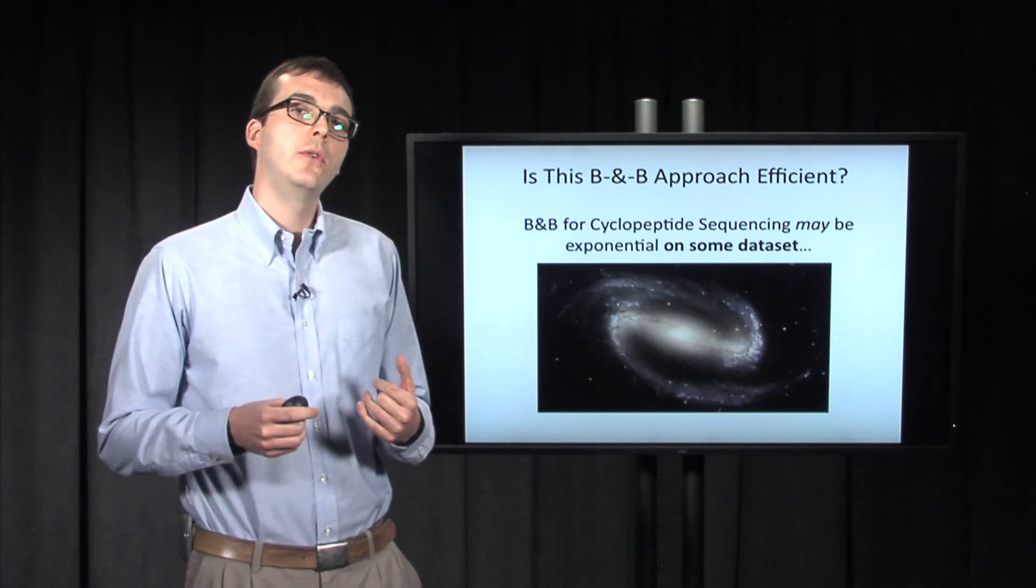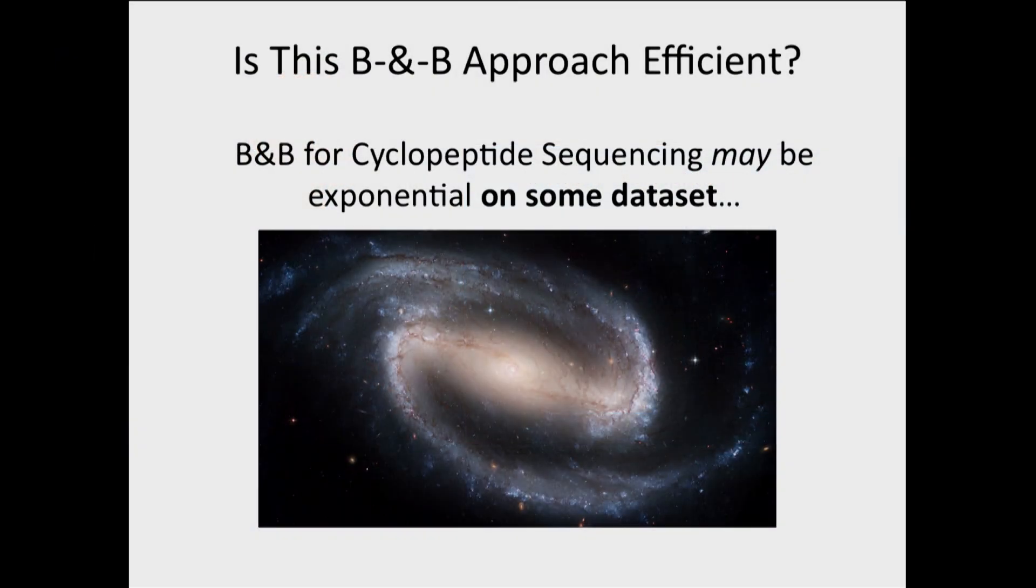It may be true that the branching and bound algorithm that we've come up with is exponential on some data set, like somewhere way out in the galaxy you can form some data set that it takes a really, really long time to run, and it's prohibitive. But in practice, it's actually really fast.